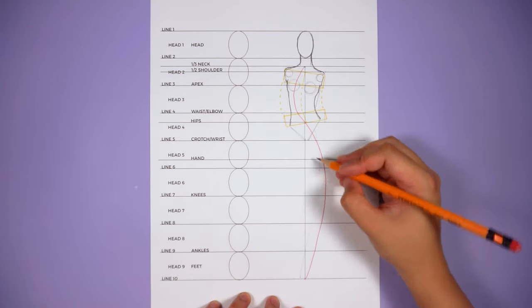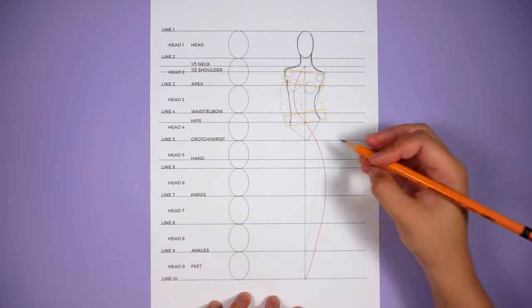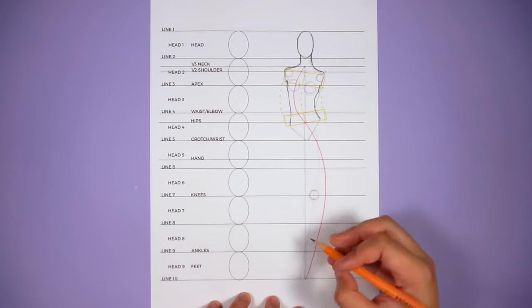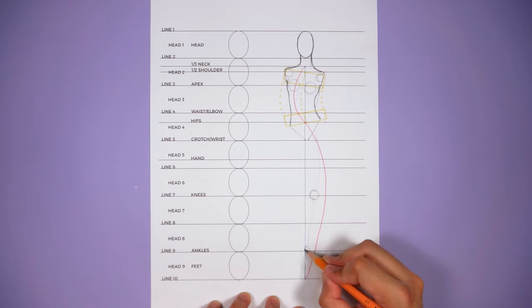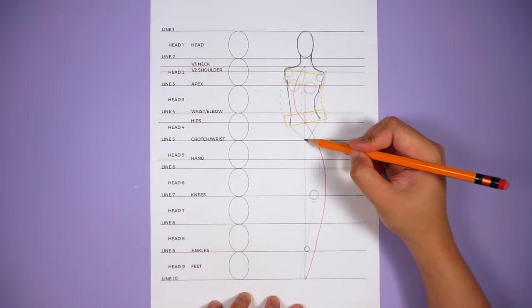That means that when you choose a position for the leg, I actually have two tips. One, place it closer to the balance line to keep the figure looking balanced and realistic. And two, also make sure to keep the support leg straight.